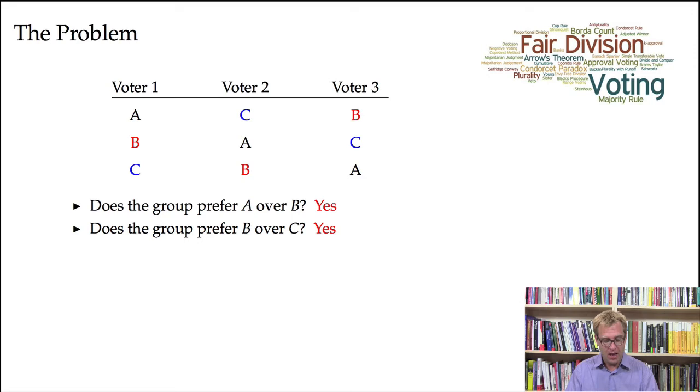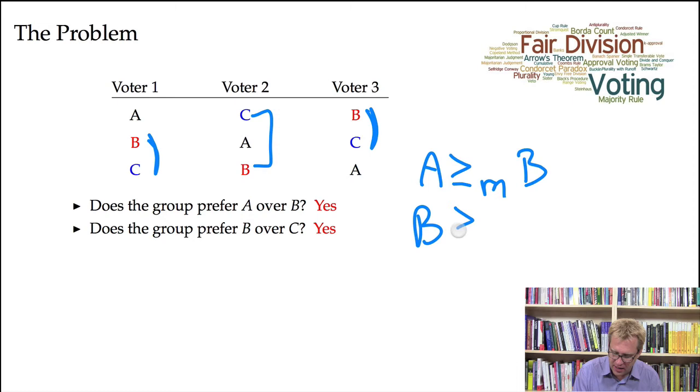What about B over C? Well, again, we can see that voter one and voter three strictly prefer B over C, while voter two prefers C over B. So it's two to one that B should be ranked above C. So we're in a situation where A is ranked above B, B is ranked above C.